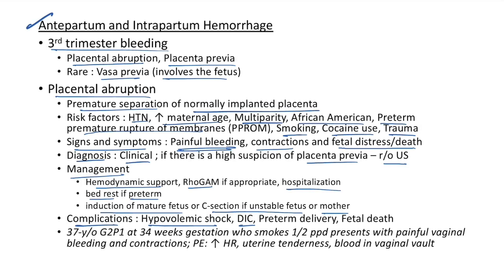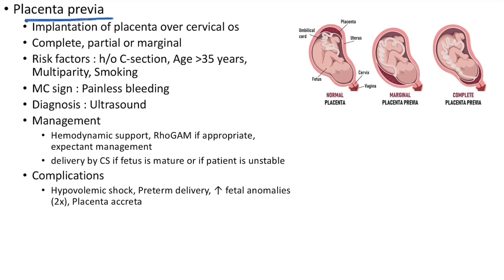Clinical case of placental abruption: 37-year-old G2P1 at 34 weeks who smokes presents with painful vaginal bleeding and contractions. Examination shows increased heart rate, uterine tenderness, and blood in vaginal vault. Placenta previa — implantation of placenta over the cervical os — can be complete, partial, or marginal. Risk factors: history of cesarean section, age >35, multiparity, and smoking. The most common sign of placenta previa is painless bleeding (remember, abruption = painful bleeding).